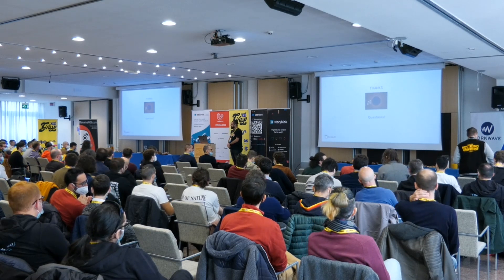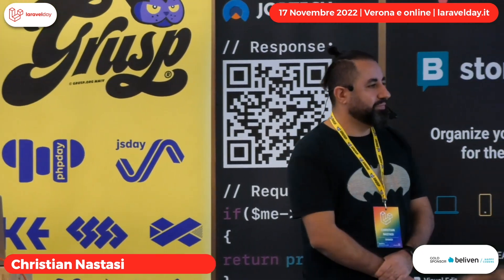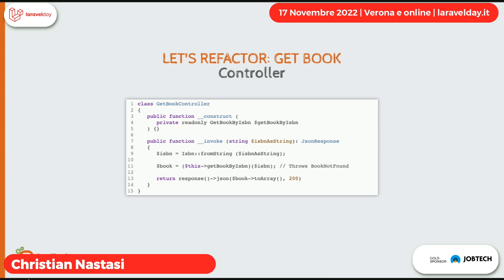Domande? Una curiosità: nelle slide precedenti c'era una proprietà tra parentesi — su riga 11, `This.getBookByISBN` tra parentesi. Perché? È invocabile — nel senso che con la classe c'è il metodo `__invoke` che lo fa diventare come se fosse un callable. In PHP, per poterlo richiamare, devi metterlo tra parentesi, altrimenti si arrabbia. Ok, grazie.